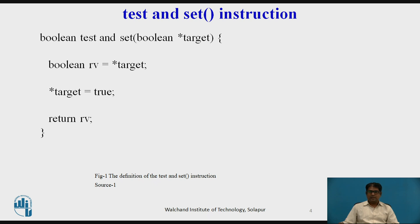We are going to abstract the main concept behind these types of instructions by describing the test-and-set and compare-and-swap instructions. The test-and-set instruction can be defined as shown in this diagram. The important characteristic of this instruction is that it is executed atomically.